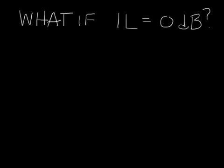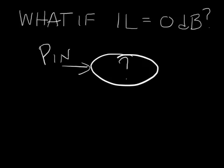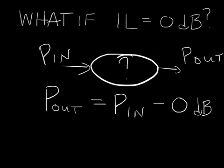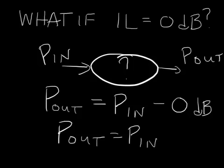What if insertion loss is 0 dB? You have your mystery device, power goes in and power goes out. If insertion loss is 0 dB, that means P_out equals P_in minus 0 dB. If something is 0 dB less, it means it's the same — so P_out equals P_in. If insertion loss is 0 dB, there is no loss; the signal just passes straight through.